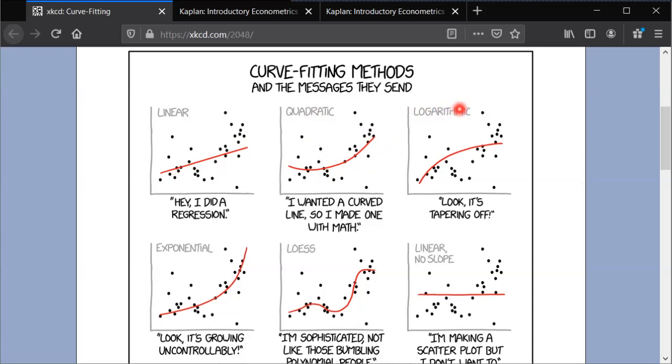Whereas if you fit this logarithmic model here, this is a linear log model, you end up getting sort of the opposite shape of the quadratic fit. Instead of increasing more and more, as XKCD author says, it's tapering off. So it's sort of steeper initially, and then it gets flatter and flatter. And then that's also the opposite of this one down here, and so on.